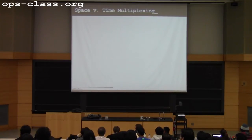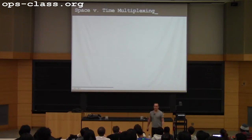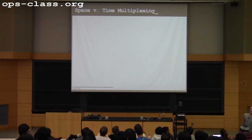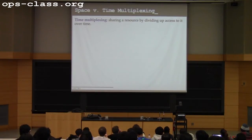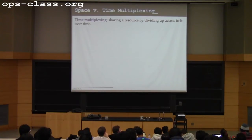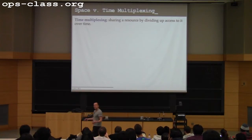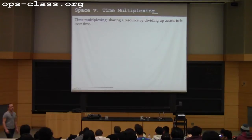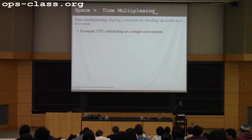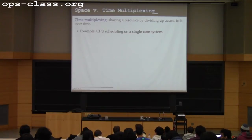There are a lot of similarities to CPU scheduling, but one of the most significant differences is how we multiplex the system resource. With the CPU we pursued time multiplexing, and with memory we're going to do spatial multiplexing. In temporal or time multiplexing, I share a resource by dividing it into little pieces and handing them out temporally — dividing time into quantums and reallocating the resource periodically. With the CPU the goal was to do it quickly enough that it looked like the resource was being simultaneously used by multiple processes. CPU scheduling on a single-core system is strictly temporal multiplexing.